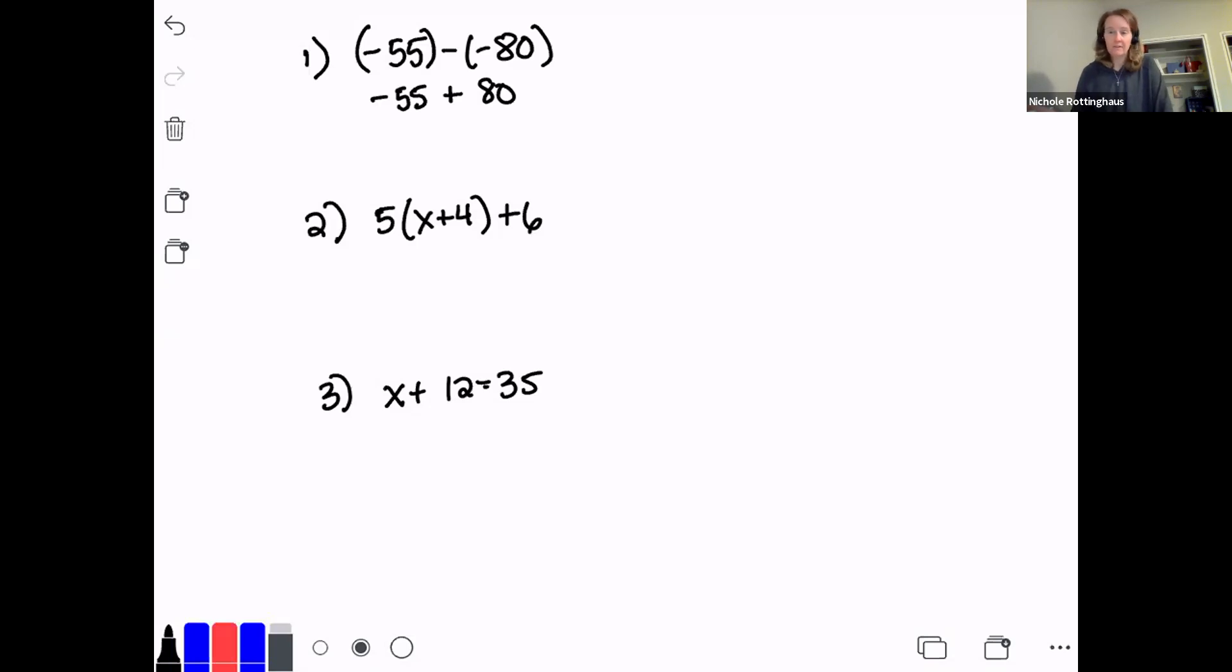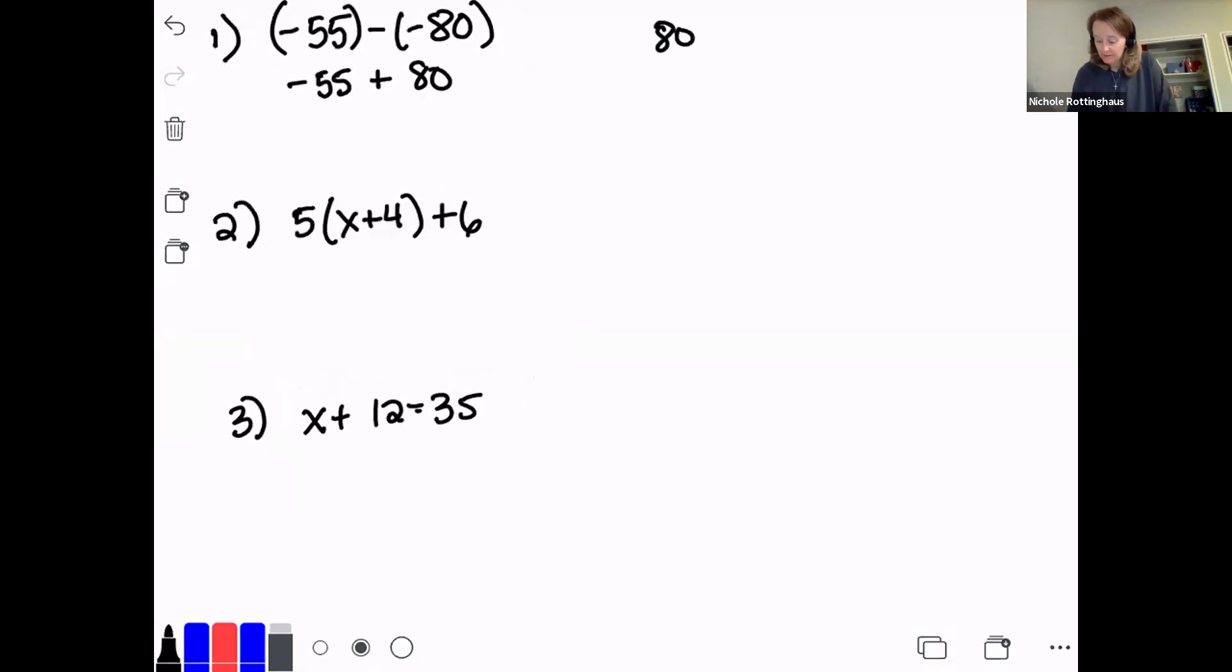But I'm adding integers with unlike signs. So that means I subtract the two numbers. And then the bigger number to start with is the sign that we will keep at the end. So if I look at this, I say, okay, 80 is bigger than 55. So my answer is going to be positive. And I'm going to subtract 80 minus 55. This becomes a 7. I end up with 25. And it's positive because the 80 was bigger than the 55.